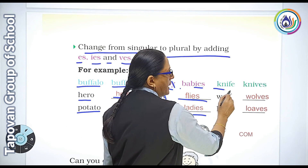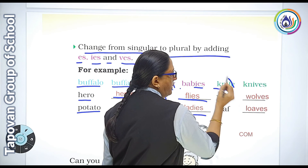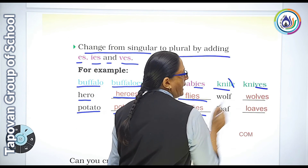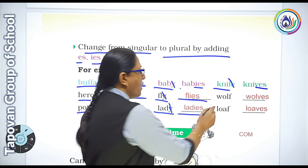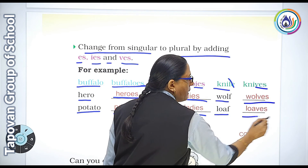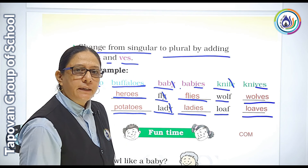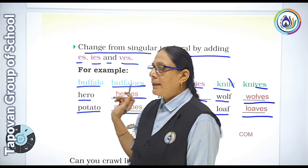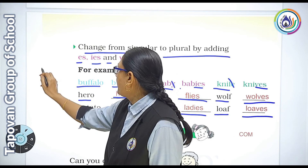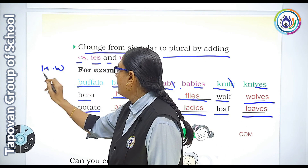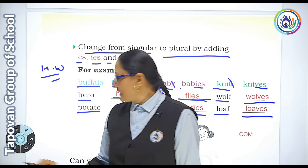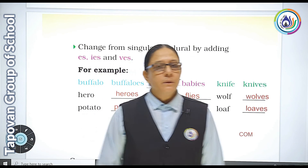Knife — fe cancel karke ves likhna hai — becomes knives. Similarly: wolf becomes wolves, log becomes logs. Aise singular se plural banana hai — dhyan se yaad karna hai aur homework mein likhna hai.